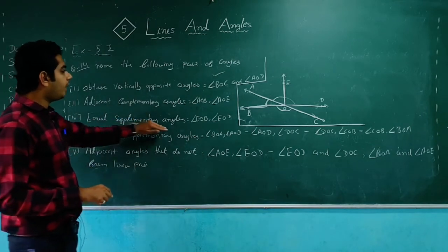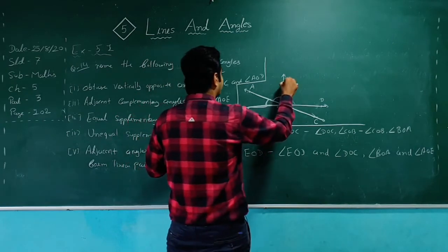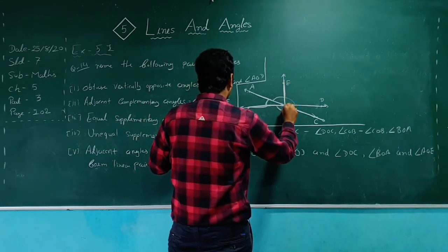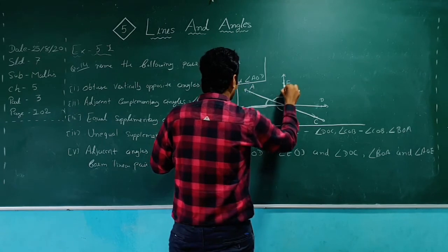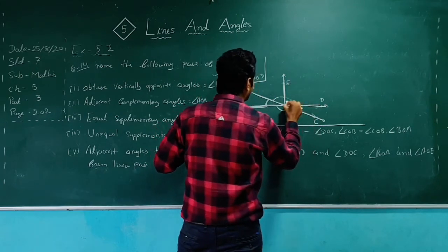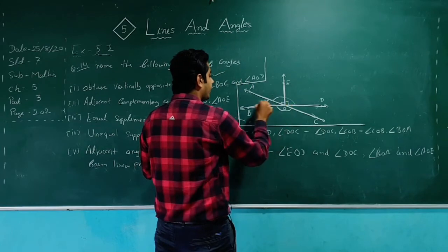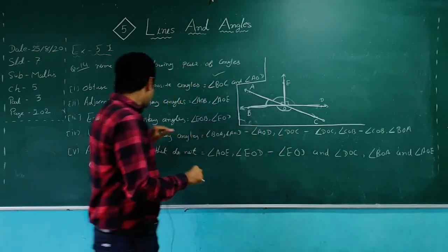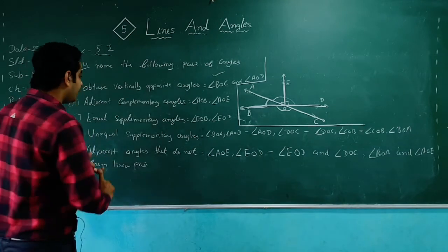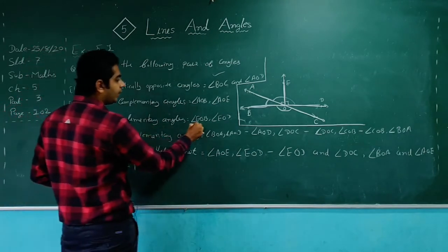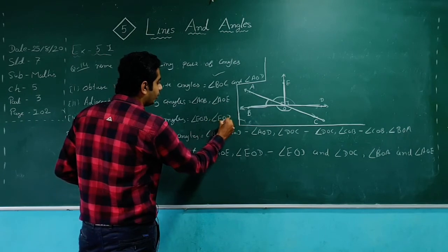Part 3: equal supplementary angles. We need angles that are equal and supplementary (sum = 180°). EOB and EOD are each 90°, so they are equal, and 90° + 90° = 180° — they are supplementary. So angle EOB and angle EOD are the equal supplementary angles.